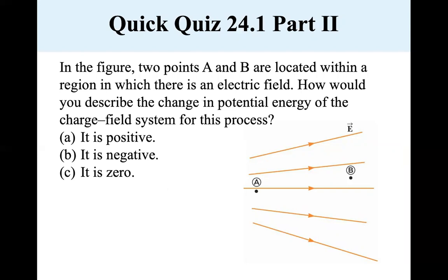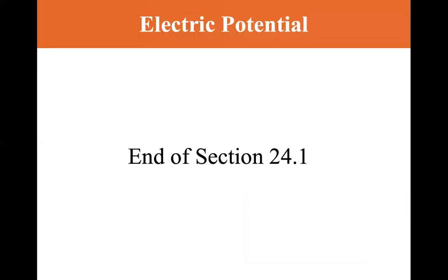In the figure two points A and B are located within the region, which there is an electric field. How would you describe the change in potential energy of the charge field system for this process? In this case, it's positive.